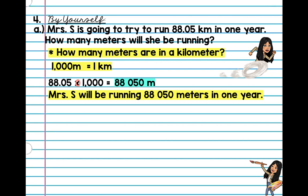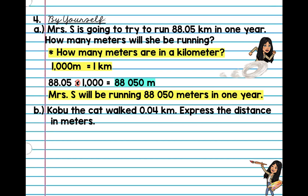Okay, so everyone good? Why don't you guys try letter B by yourself. Koba the cat walked 0.04 kilometers. Express the distance in meters — that just means the same thing: how many meters did he walk? Pause the video and try by yourself. Alright, same exact question. How many meters in a kilometer? It's 1,000, so I'm going to do 0.04 times 1,000. We have three zeros, so 1, 2, 3. My answer is 40 meters. Koba walked 40 meters.